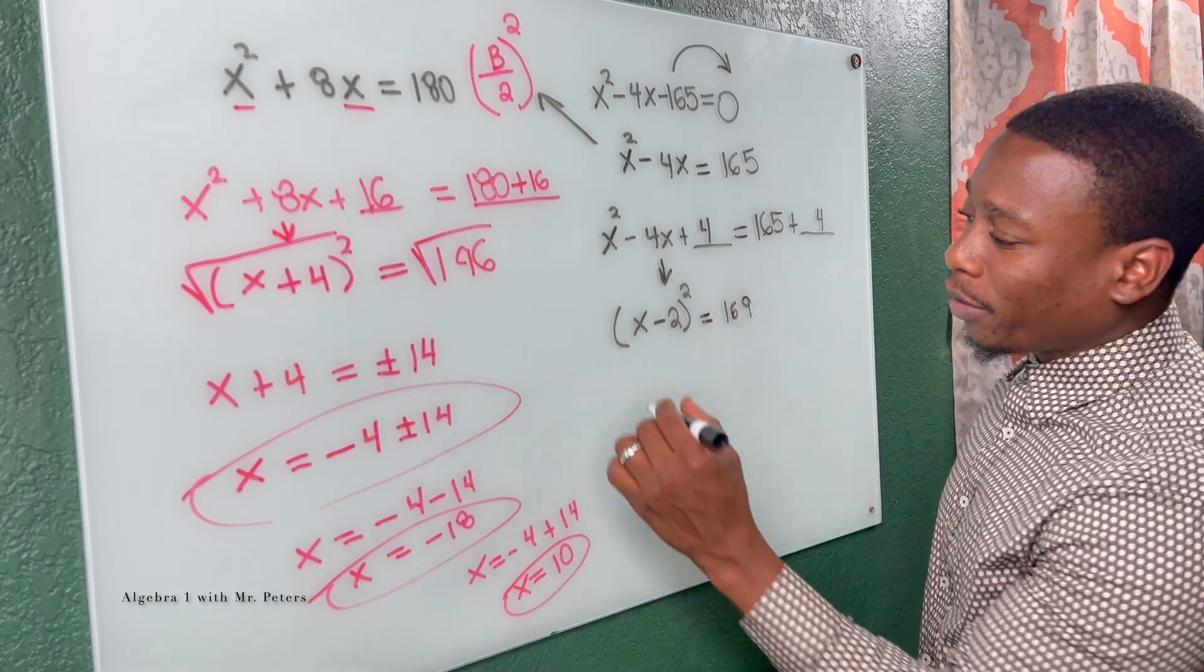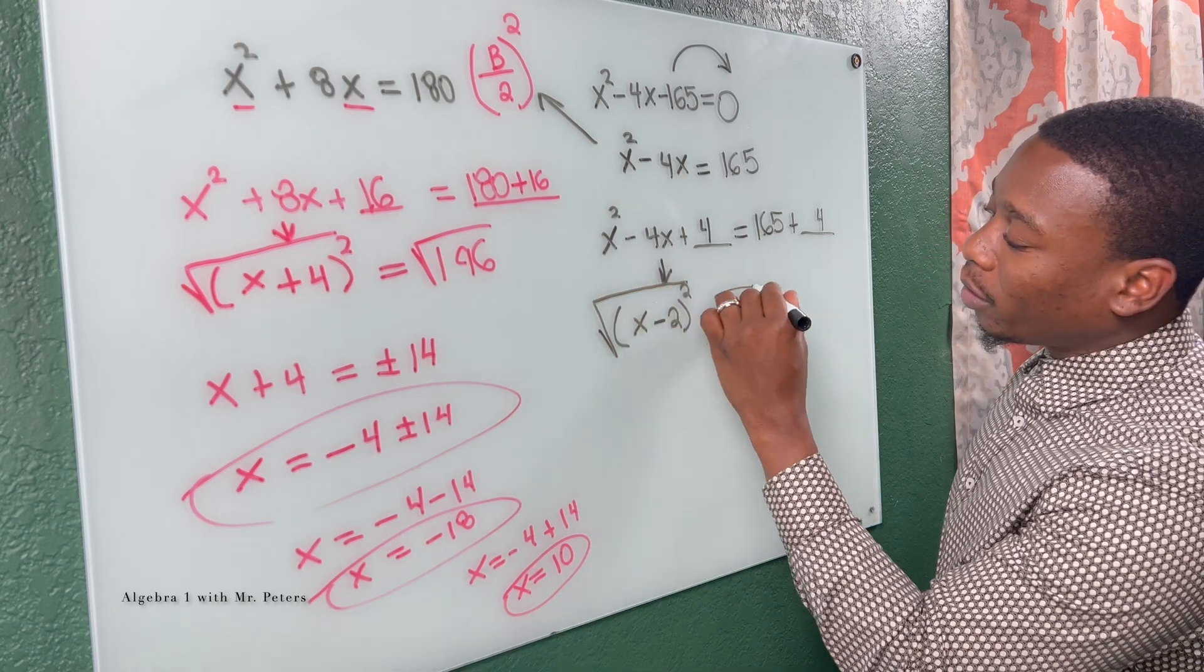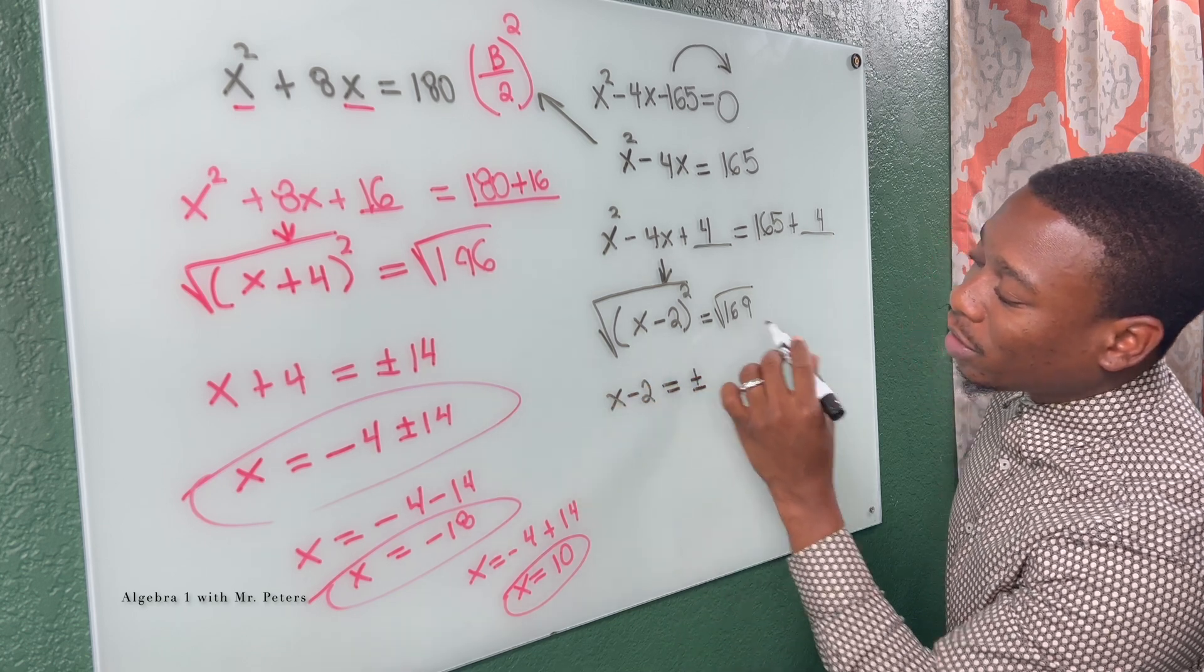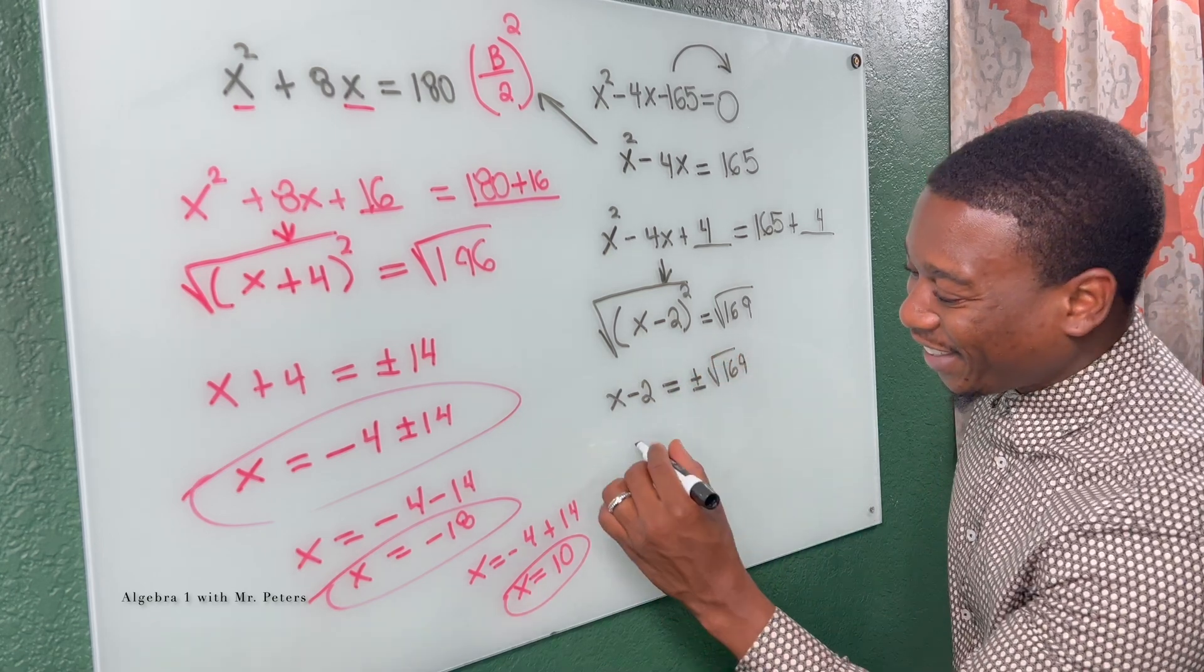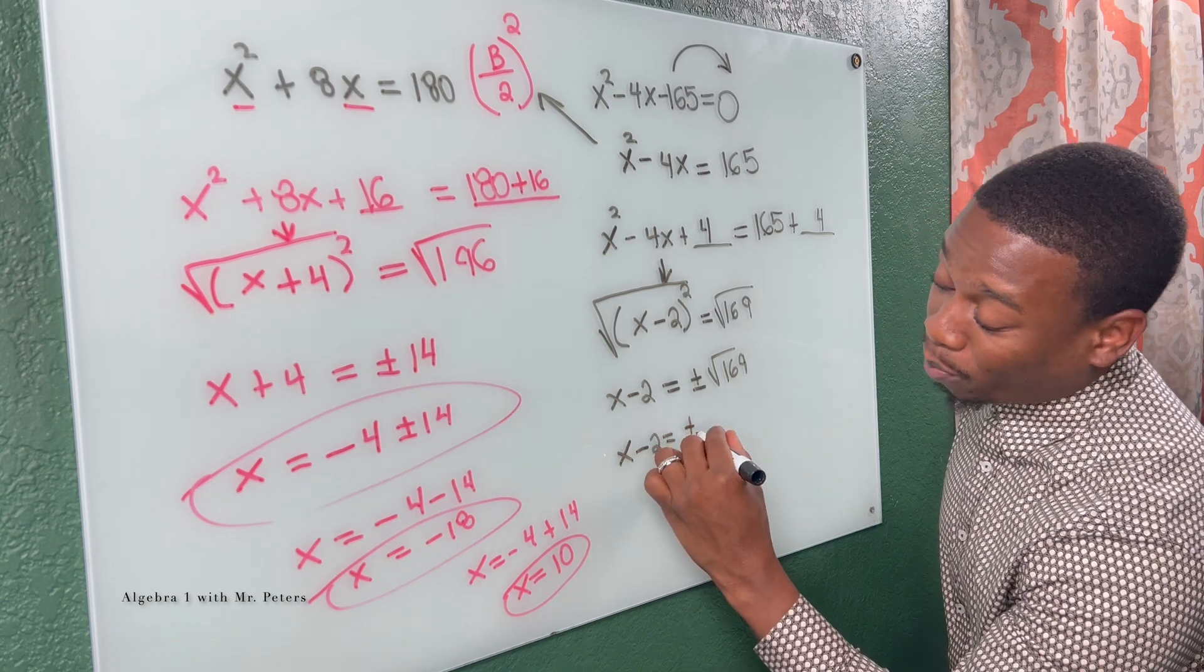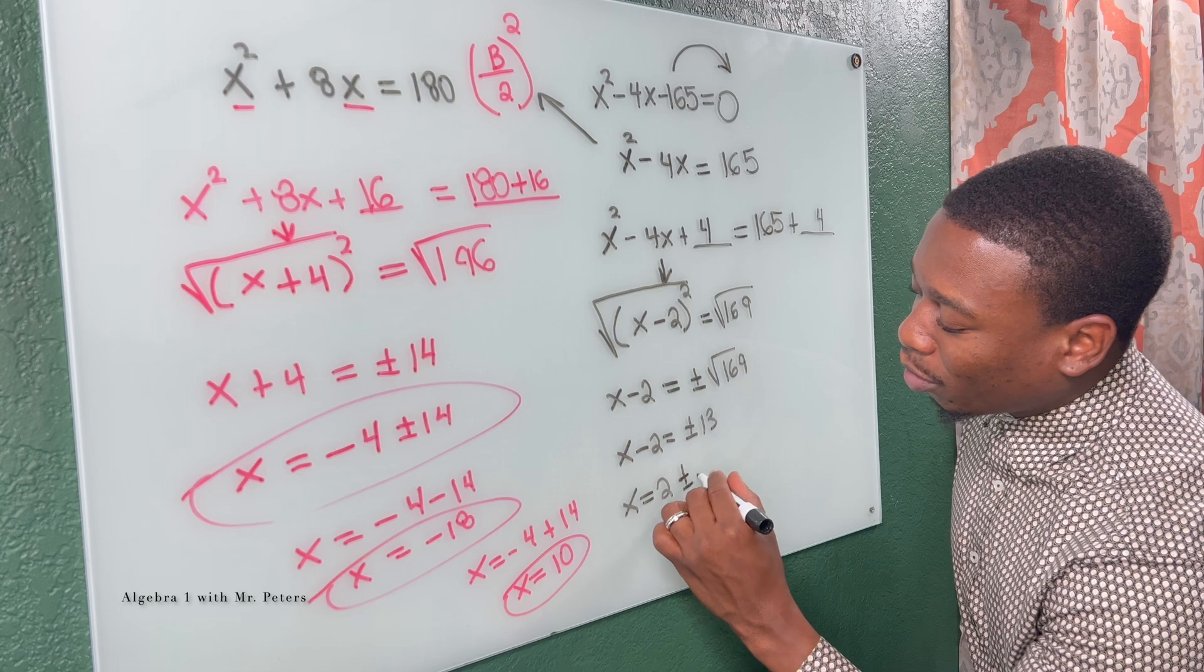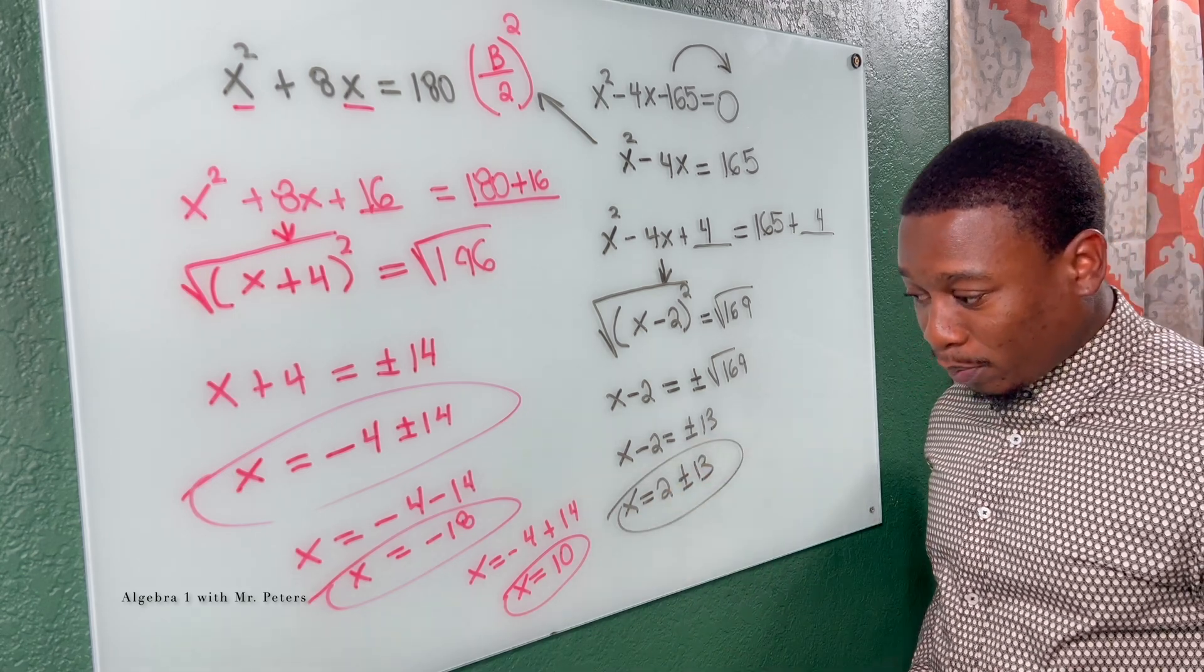Back to the square root method. Get rid of the exponent by taking the square root on that side, do the same to the other side. So now we have X minus two is equal to plus or minus the square root of 169, which is 13. So now we have X minus two is equal to plus or minus 13. X is equal to two plus or minus 13. So now when we split this equation,